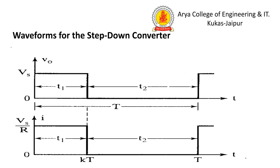The output waveform of the step-down converter shows: when the switch is connected, voltage Vs appears during time T1. When the switch is off during time T2, the output drops to zero. This produces the characteristic stepped waveform for both voltage and current.